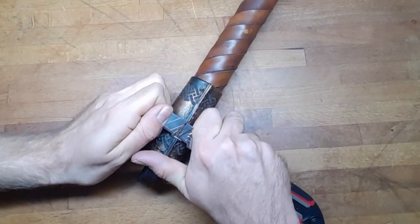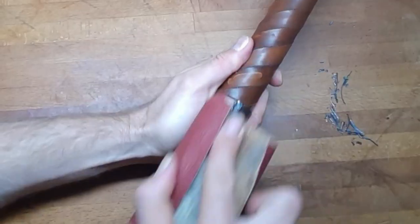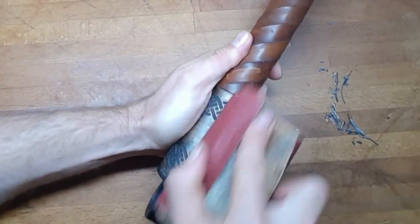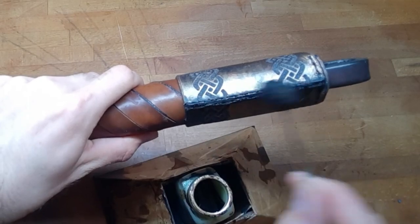Smooth out the sewing edges by cutting away any excess, sandpapering it, re-dyeing it and burnishing it.